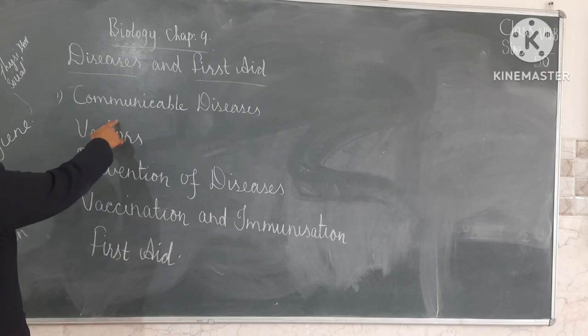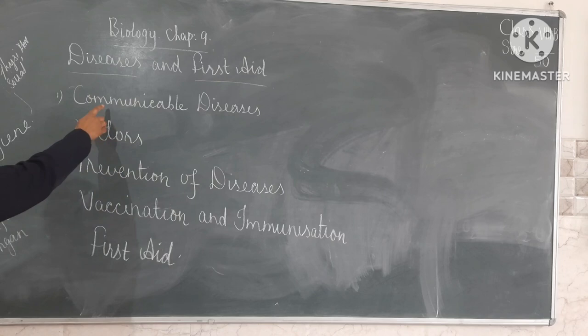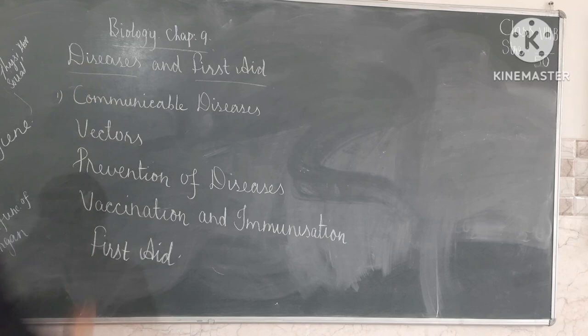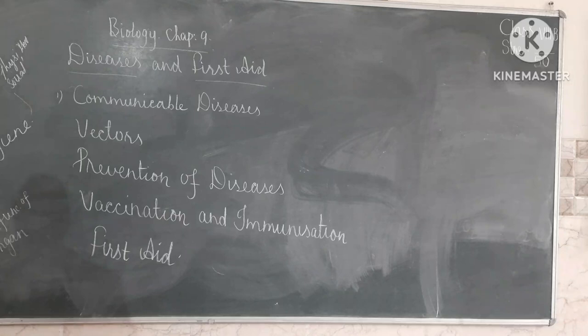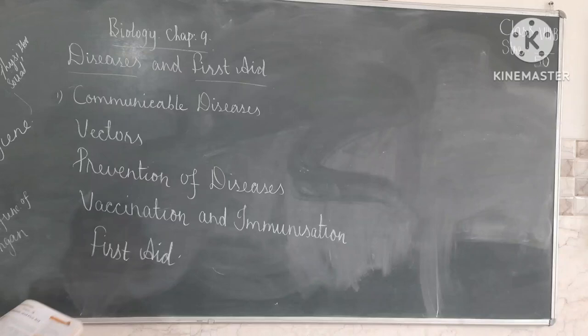In this class, we are going to discuss communicable diseases. You already learned what is the meaning of disease and what are the two main kinds of diseases. This communicable disease is related with health and hygiene. Health means the physical, mental and social well-being of an individual. Health and hygiene are related with each other and have a direct relation with diseases.